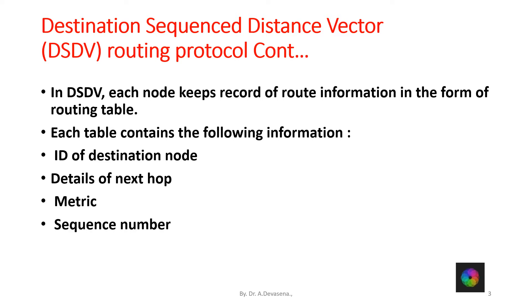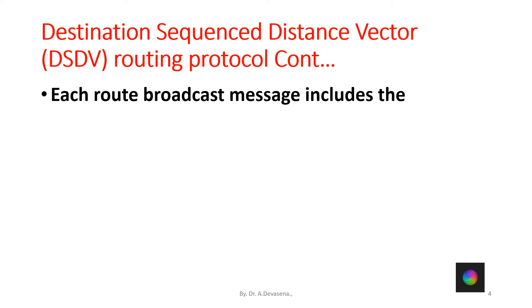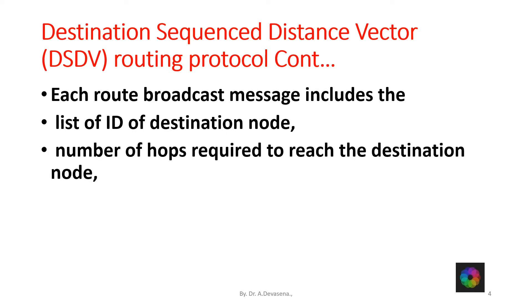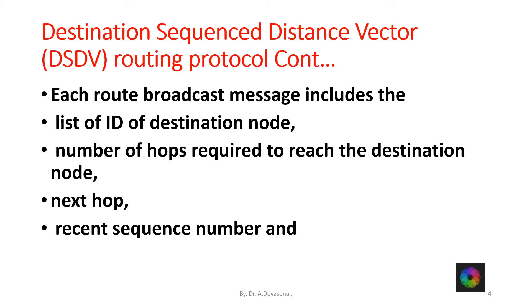The next parameter is sequence number. The data has to be transferred in the form of a packet, so the data has to be maintained in a proper sequence number. The next parameter is the time-to-loop parameter, which has to be maintained by each node. Each route broadcast message includes the list of: ID of the destination node, number of hops required to reach the destination node, next hop, recent sequence number, and metric parameter. These are the information that has to be maintained by each route.